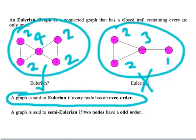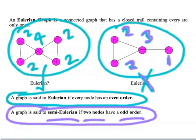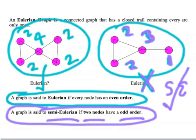Moving on, the second definition we need to learn is for semi-Eulerian graphs. A semi-Eulerian graph has exactly two nodes of odd order. Coming back to the right-hand graph, we have nodes of order 1, 3, 2, and 2. That graph is not Eulerian, but it is semi-Eulerian because it has exactly two nodes of odd order.